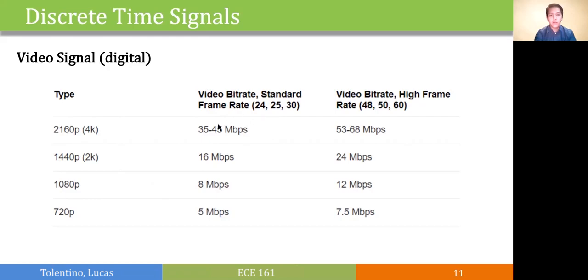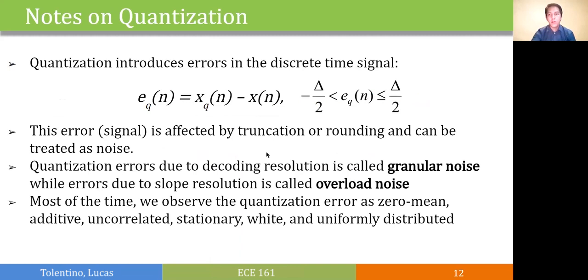Now, some notes on quantization. The resolution delta defines the error compared to our original input signal. This error can be computed by subtracting the quantized signal from the original signal. Depending on our implementation, if we use truncation or rounding, we can minimize this error. Most of the time, these errors are classified as granular noise for decoding resolution errors, or overload noise for errors due to slope resolution.